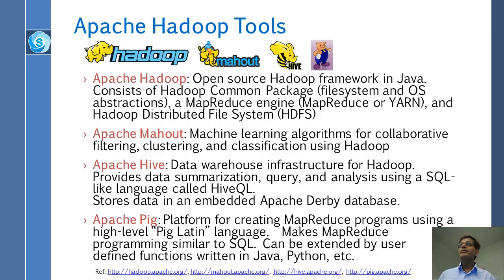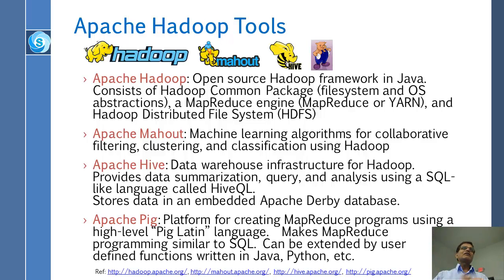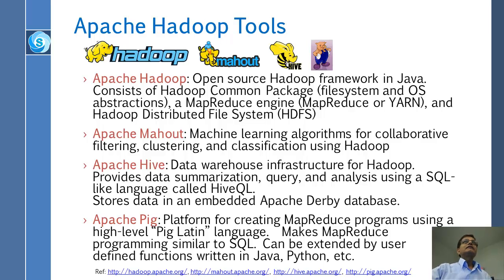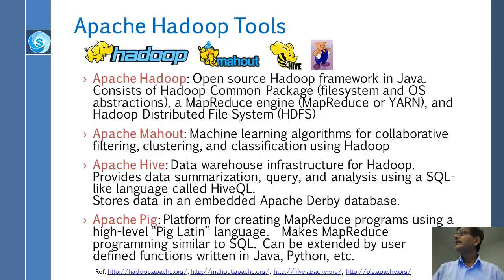Hive is just the interface as a data warehouse — it's a package you can put on top of Hadoop and people can use it through a familiar query interface. Pig is the platform for creating MapReduce programs using a high-level language called Pig Latin, which is similar to SQL.